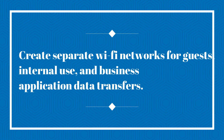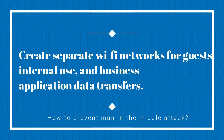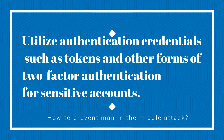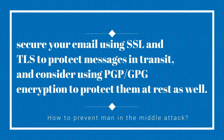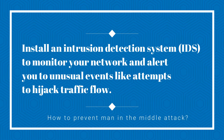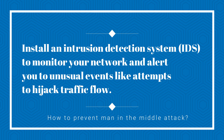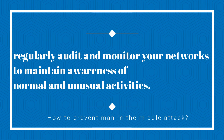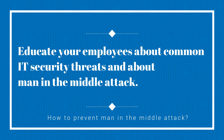Create separate Wi-Fi networks for guests, internal use, and business application data transfers. Utilize authentication credentials such as tokens and other forms of two-factor authentication for sensitive accounts. Secure your email using SSL and TLS to protect messages in transit, and consider using PGP and GPG encryption to protect them at rest as well. Install an intrusion detection system to monitor your network and alert you to unusual events like attempts to hijack traffic flow. Regularly audit and monitor your networks to maintain awareness of normal and unusual activities. Finally, educate your employees about common security threats and about man-in-the-middle attacks.